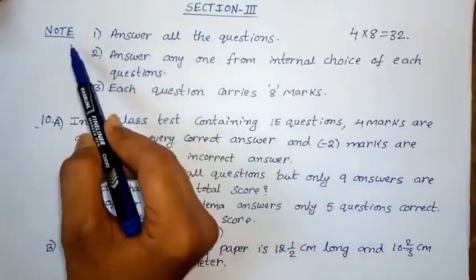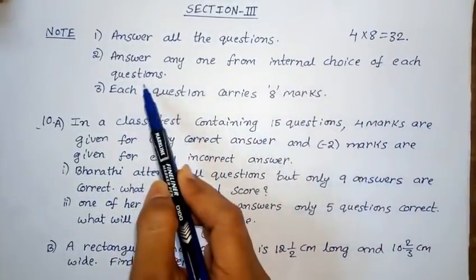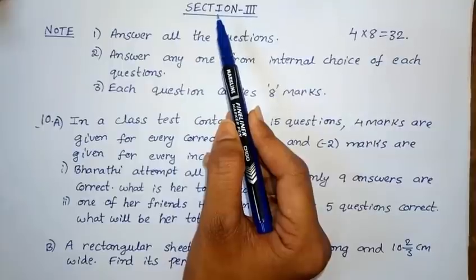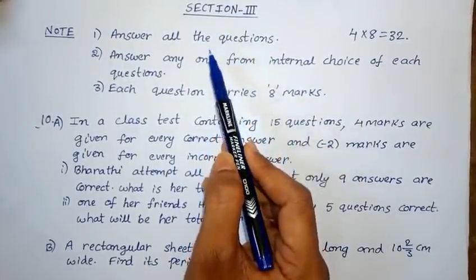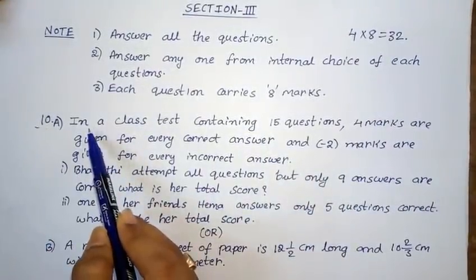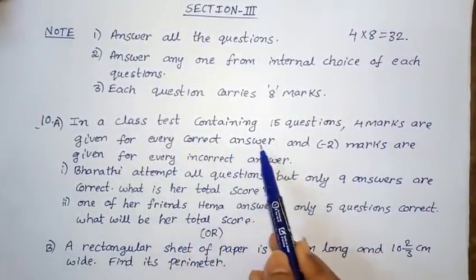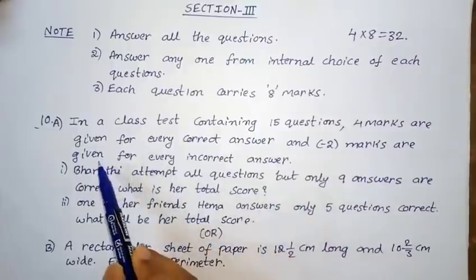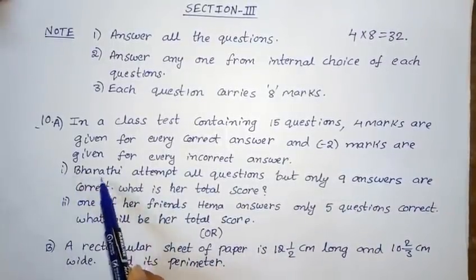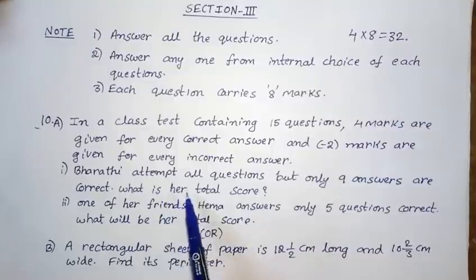Section 3: Answer all questions. Answer any one from the internal choice of each question. Each question carries 8 marks. Tenth question Part A: Bharati attempts all questions but only 9 answers are correct. What is her total score?